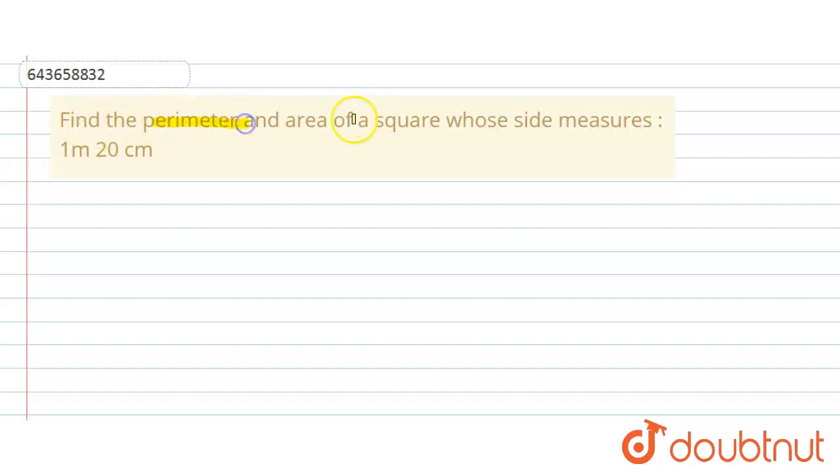find the perimeter and area of a square whose side measures one meter and 20 centimeters. Okay, so here given as side of square one meter and 20 centimeters. So we will change into one unit, either meter or either centimeter.